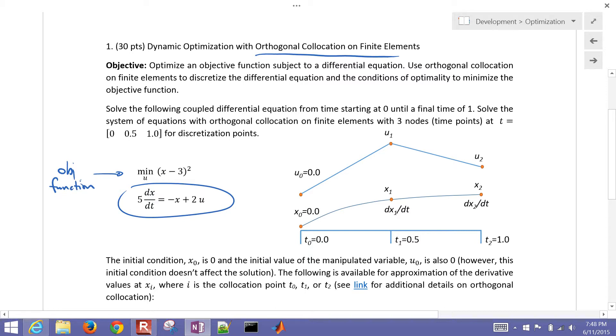We want to solve this starting at a time of zero until a time of one and solve the system of equations with orthogonal collocation on finite elements with three nodes. Those are three time points as illustrated here: one, two, and three at time zero, zero point five, and one.